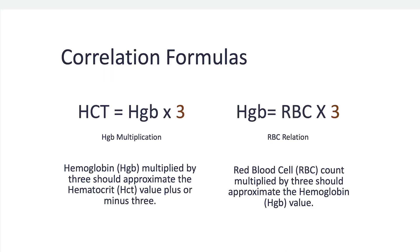Correlation Formulas: Hemoglobin (HGB) multiplied by 3 should approximate the hematocrit (HCT) value, plus or minus 3. Red blood cell (RBC) count multiplied by 3 should approximate the hemoglobin (HGB) value.